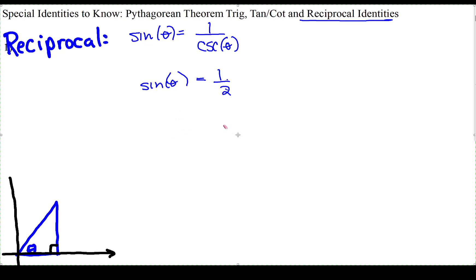Let me make it more visual. If we flip the right side to make that 2 over 1, the reciprocal of sine is 1 over sine.